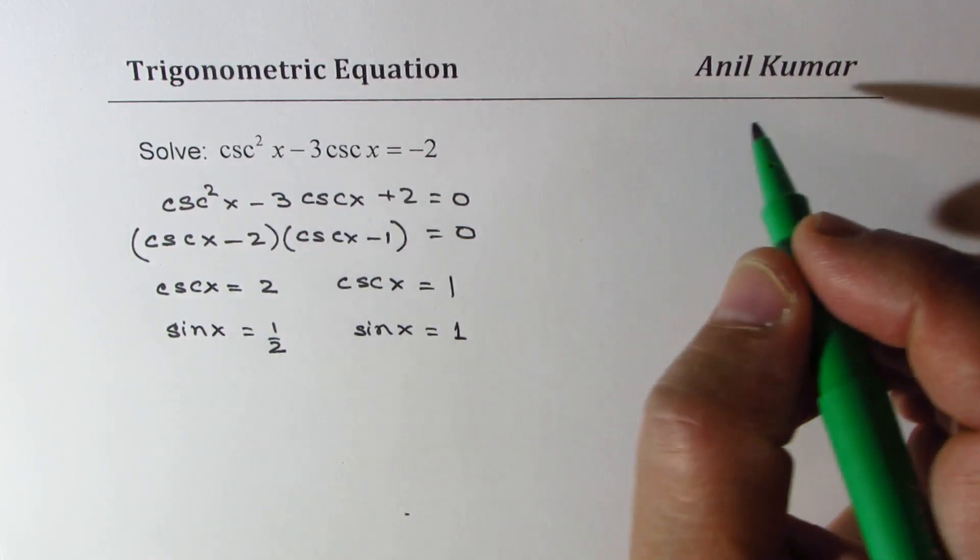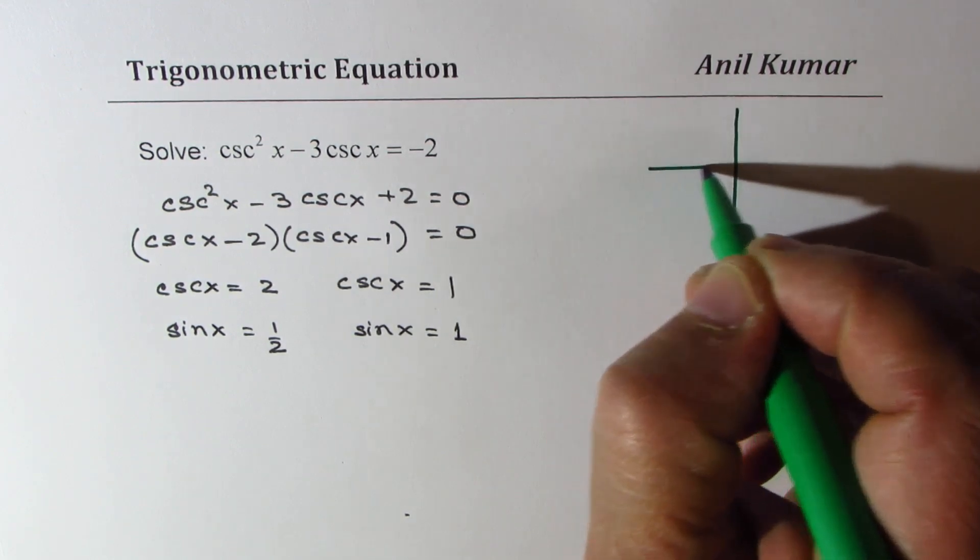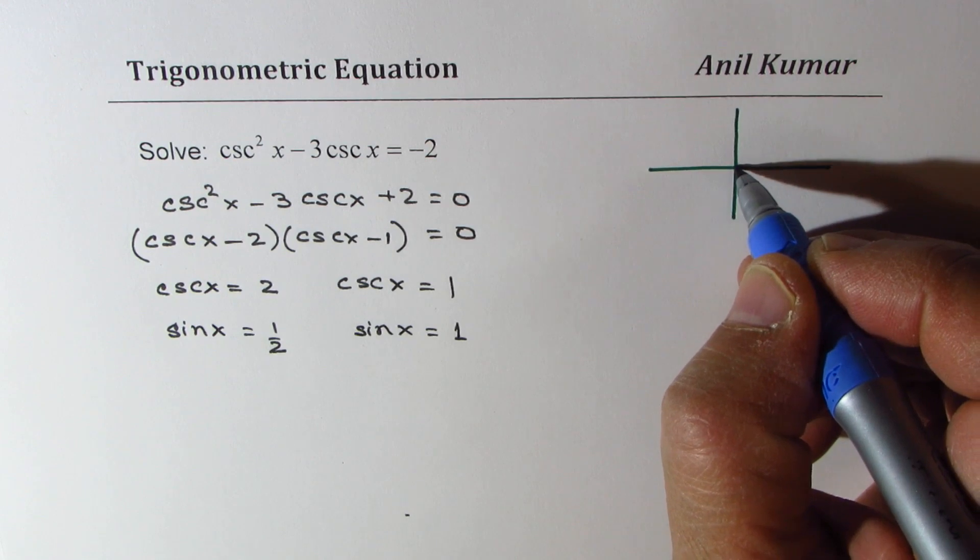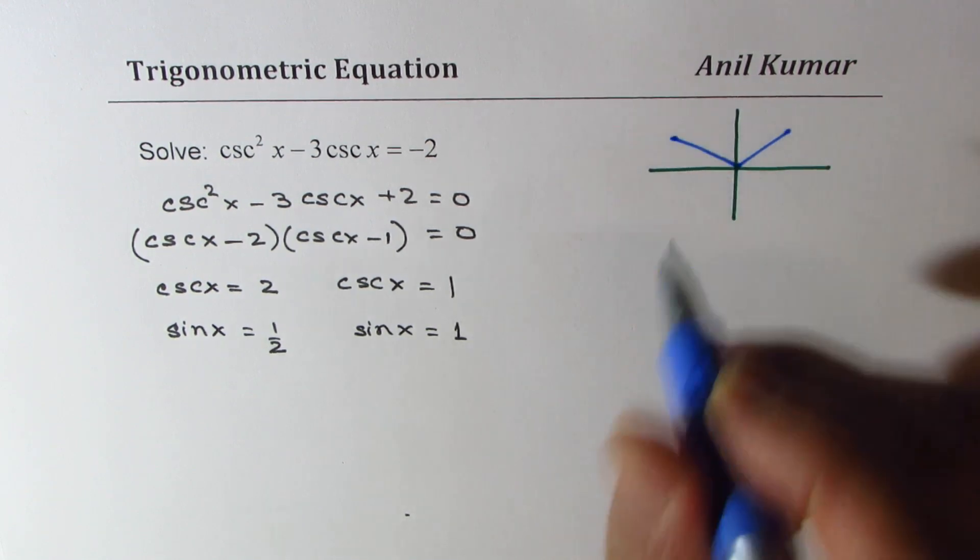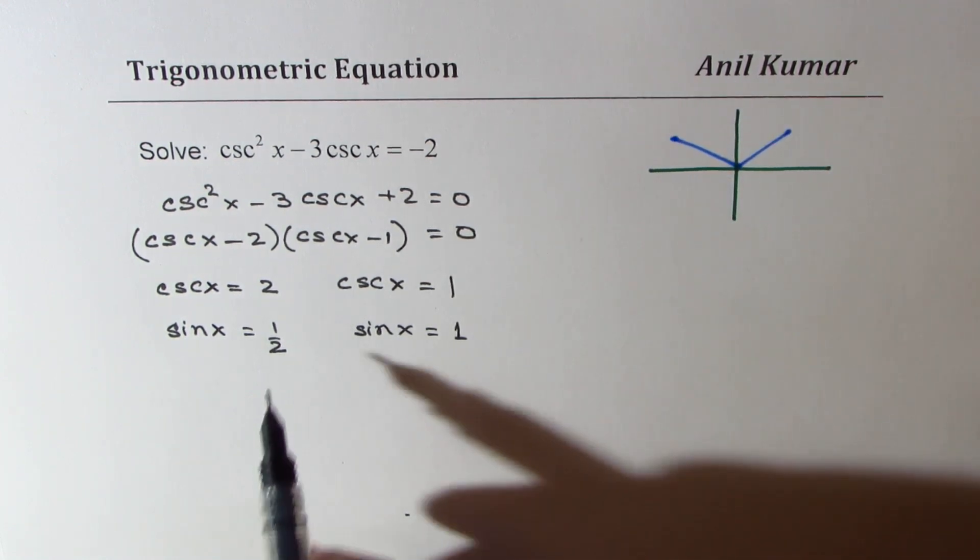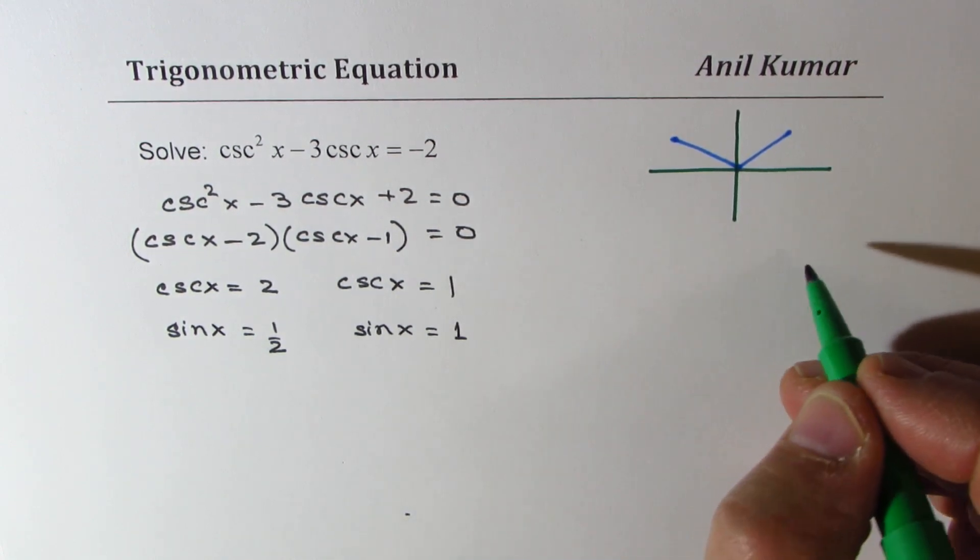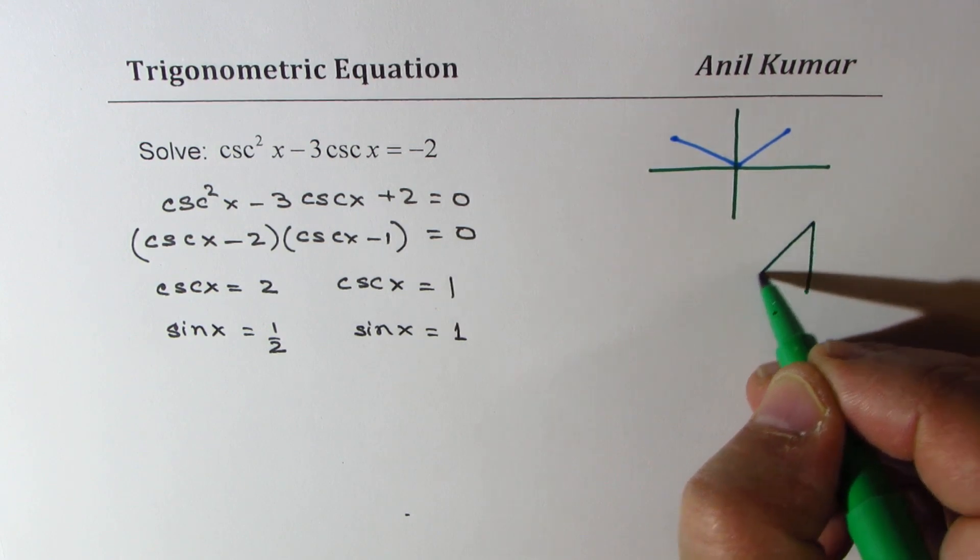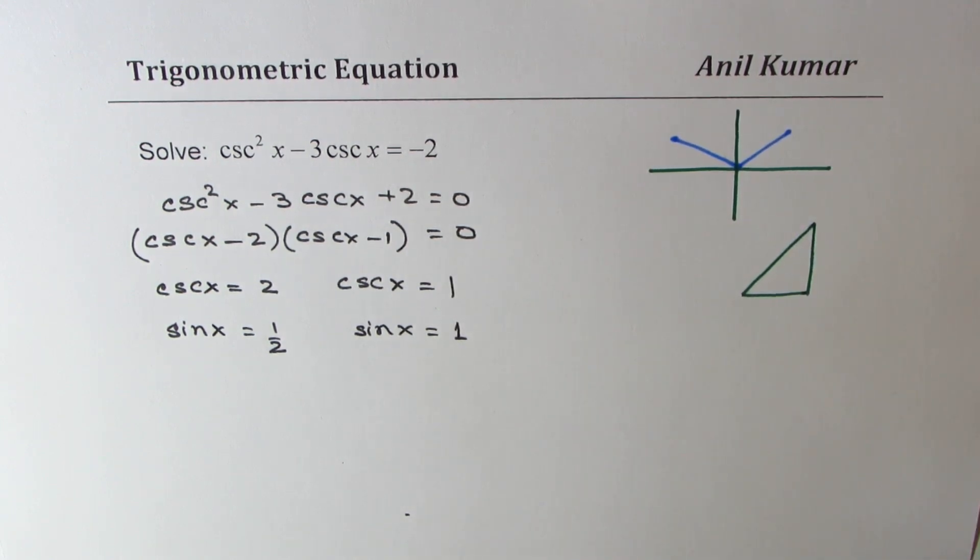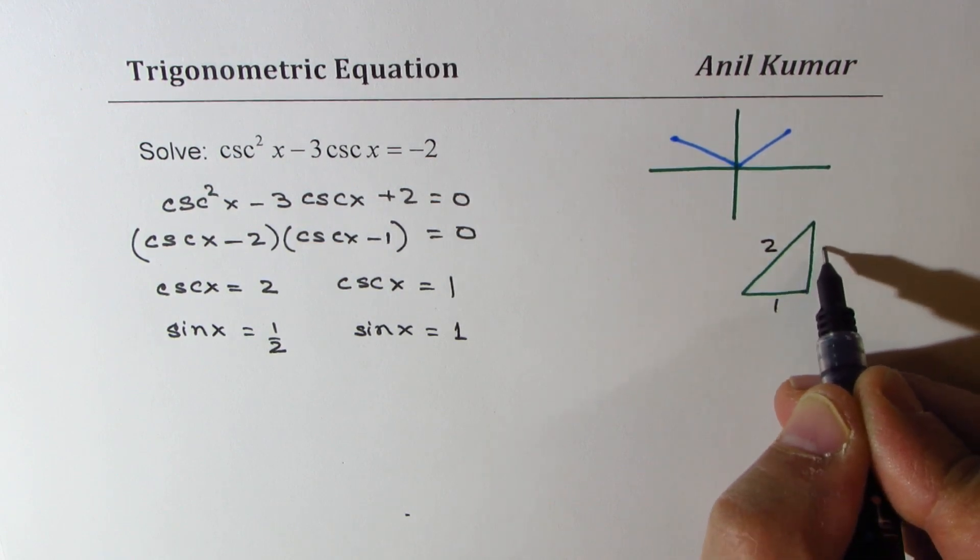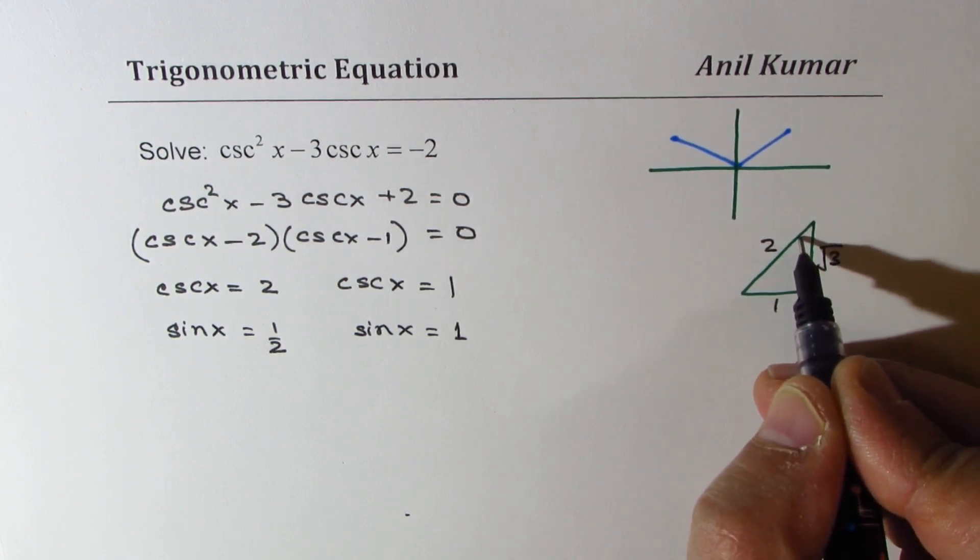Now when is sine x half? Sine x is positive in both these quadrants. So for half, let's look into the triangle, a special triangle: 30, 60, 90.